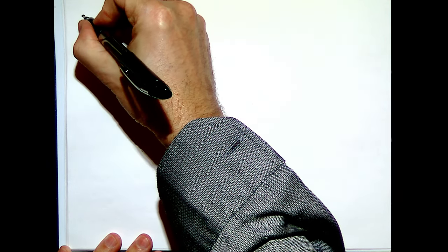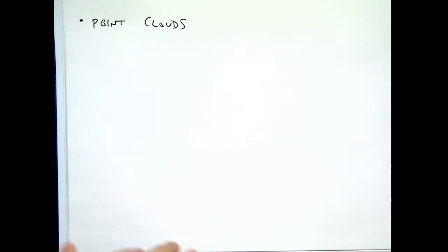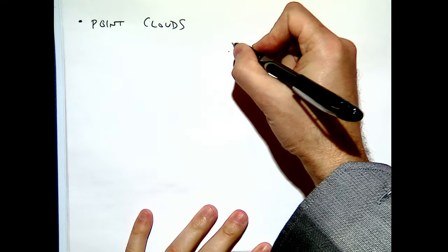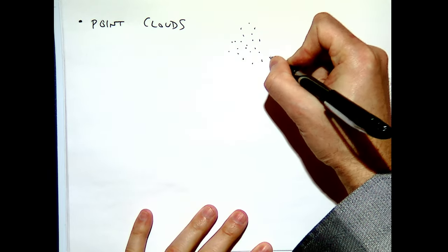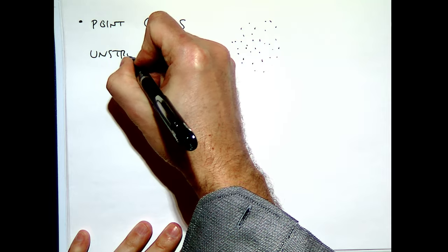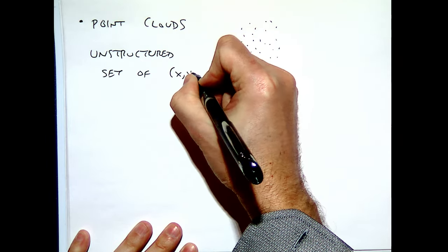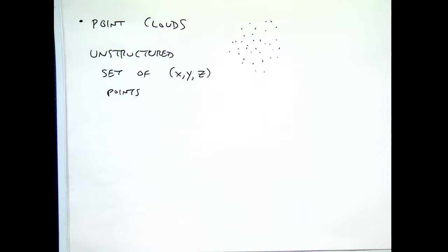Representation number two is point clouds. In a way, this is a very natural way of representing a 3D object because it's the representation that most naturally comes out of a physical scanner. What you get is basically a cloud of unstructured points — an unstructured set of x, y, z points that represent samples on the surface of an object.